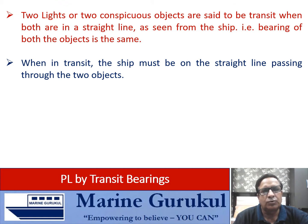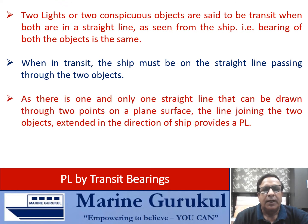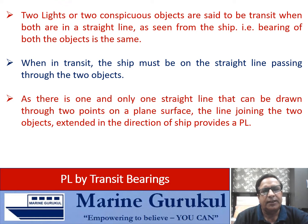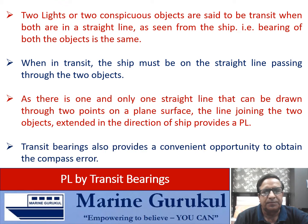As there is one and only one straight line that can be drawn through two points on a plane surface, the line joining the two objects, extended in the direction of the ship, provides a position line to the observer.